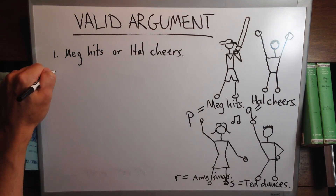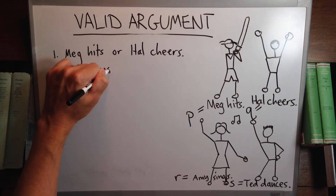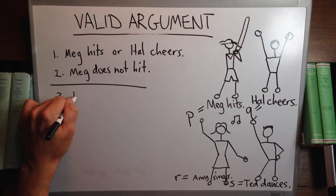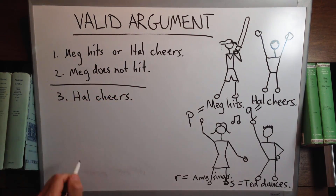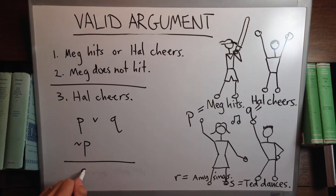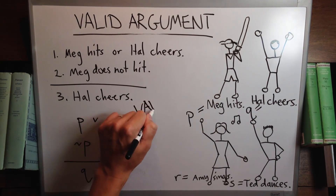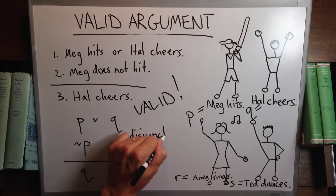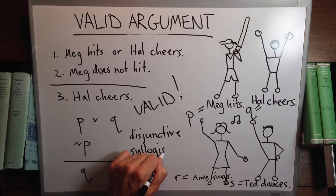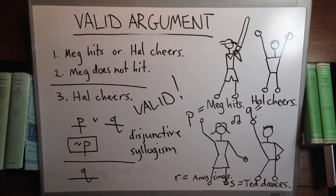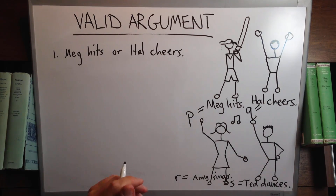Meg hits or Hal cheers. Meg does not hit; therefore Hal cheers. That's P or Q; not P; therefore Q. It's called a disjunctive syllogism. You are presented with two disjuncts and you deny one of them, so you can infer the other one.